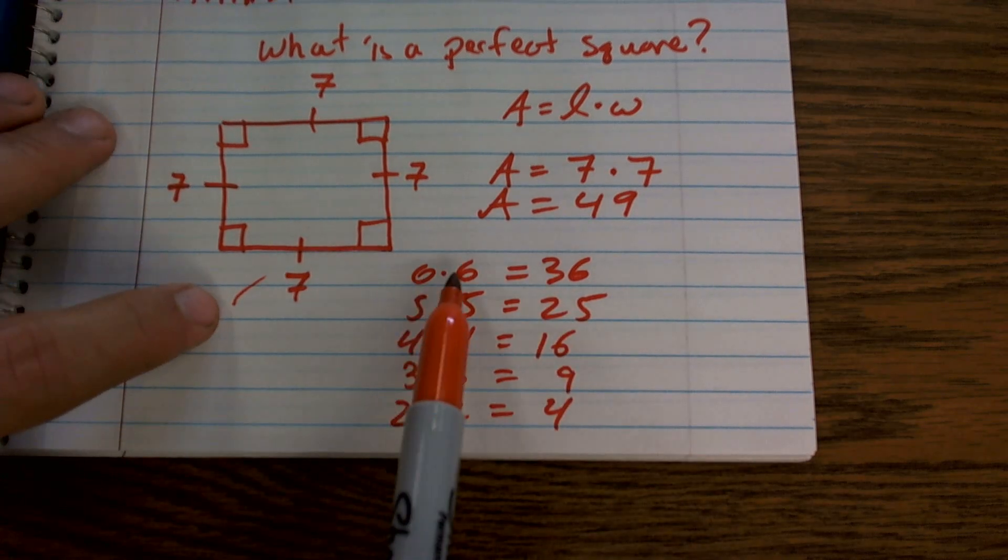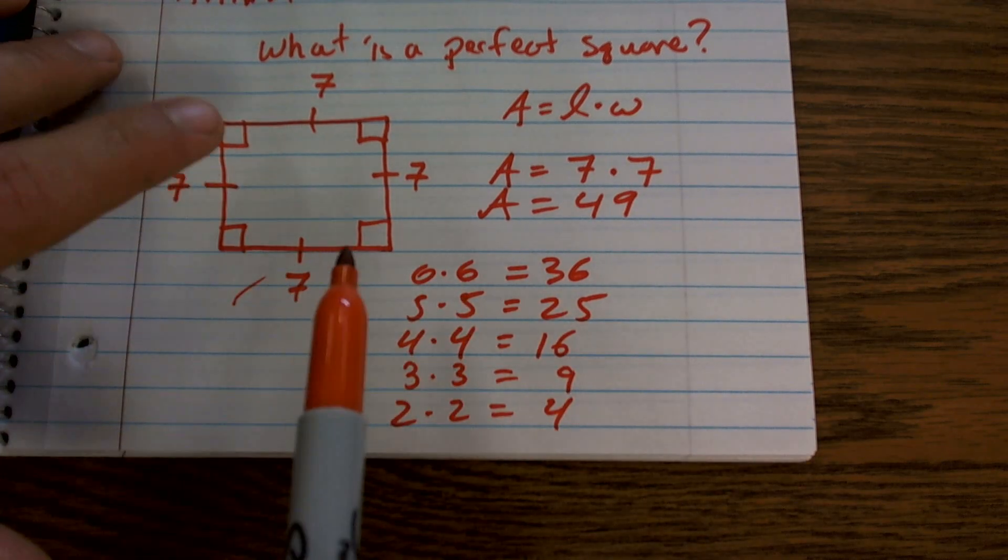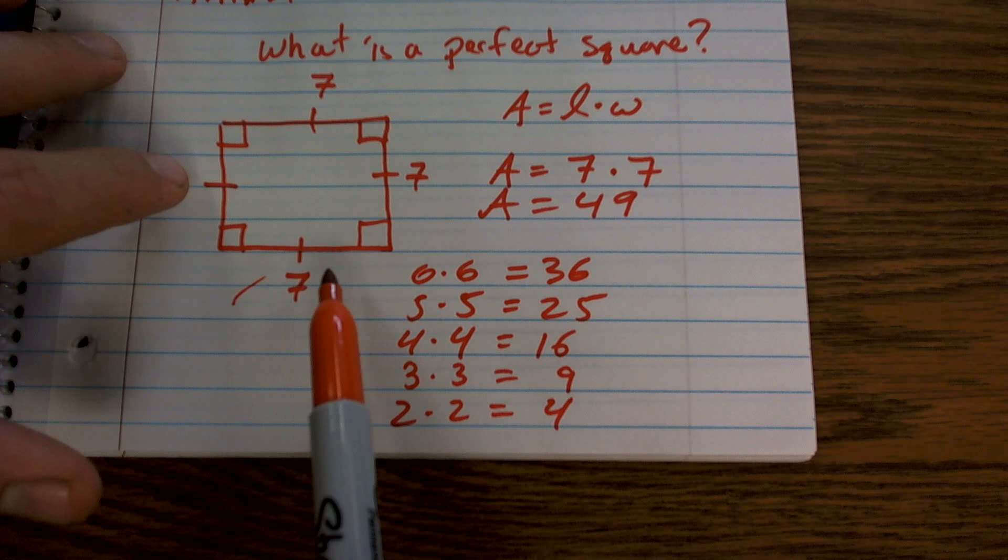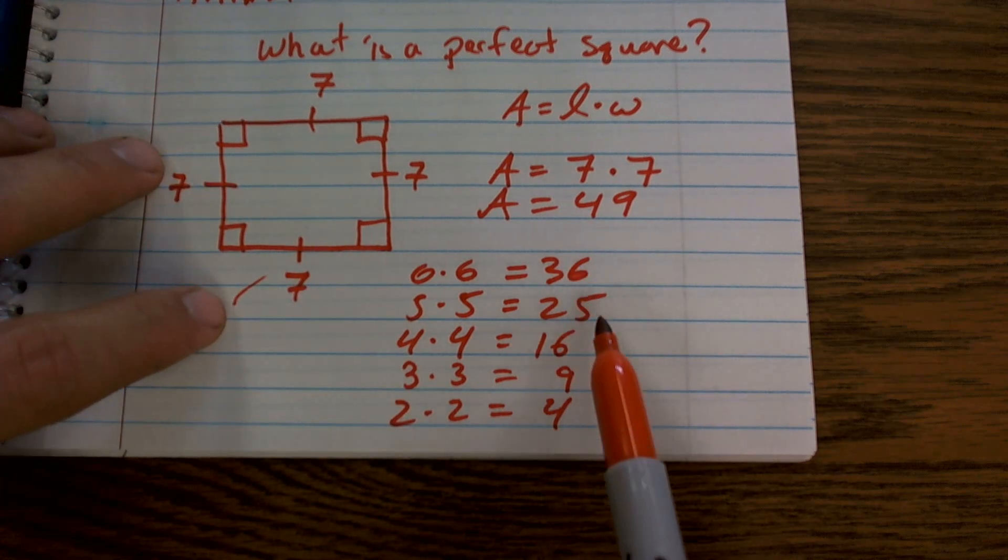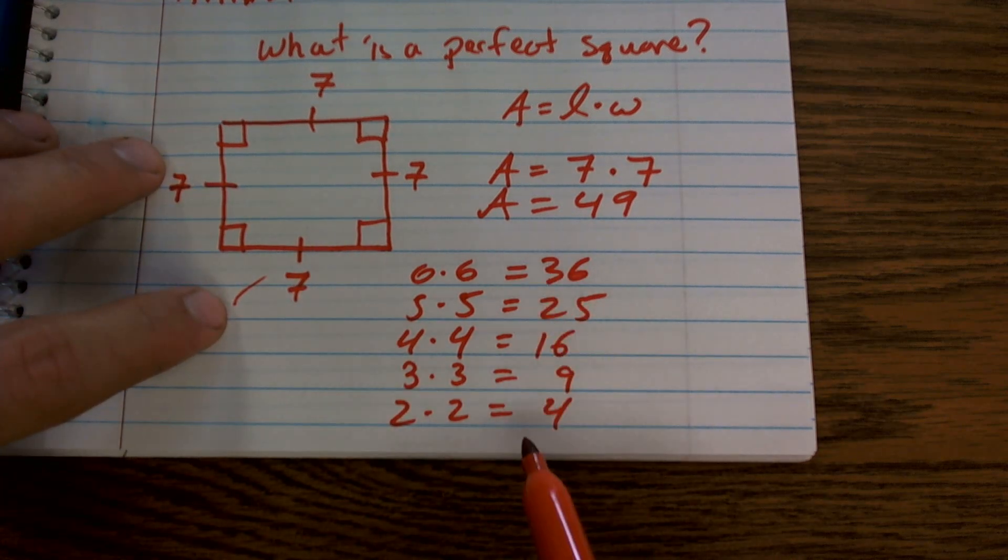And the area is what we call those numbers, perfect squares.